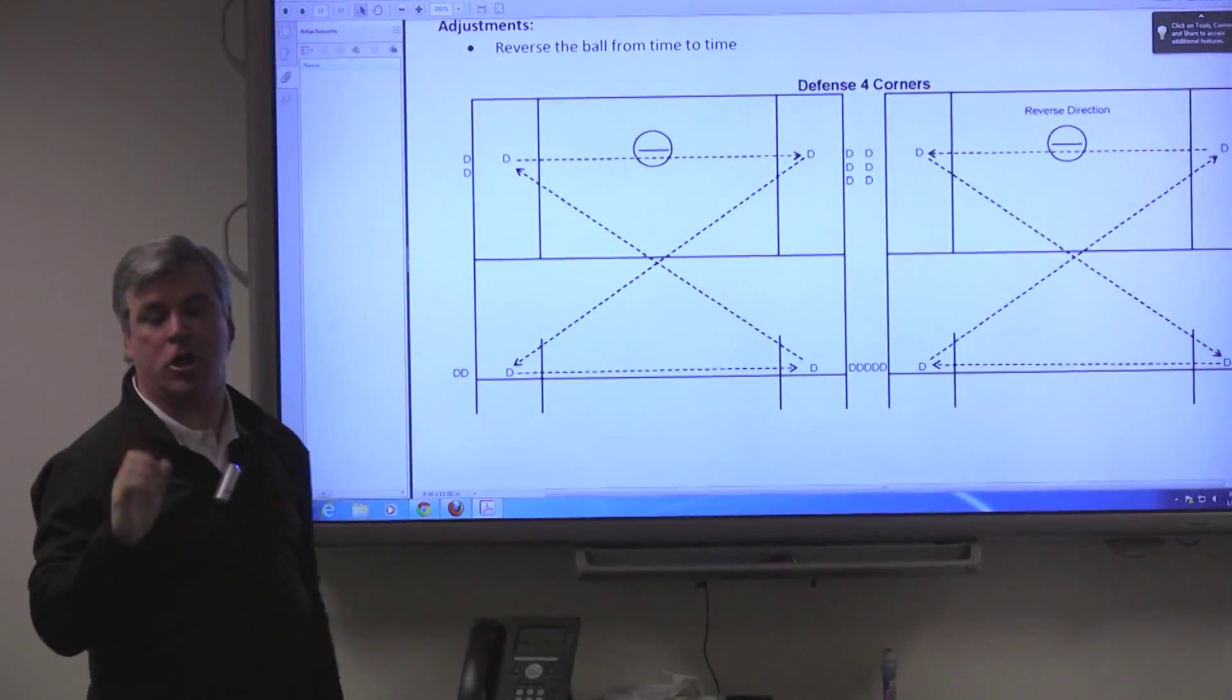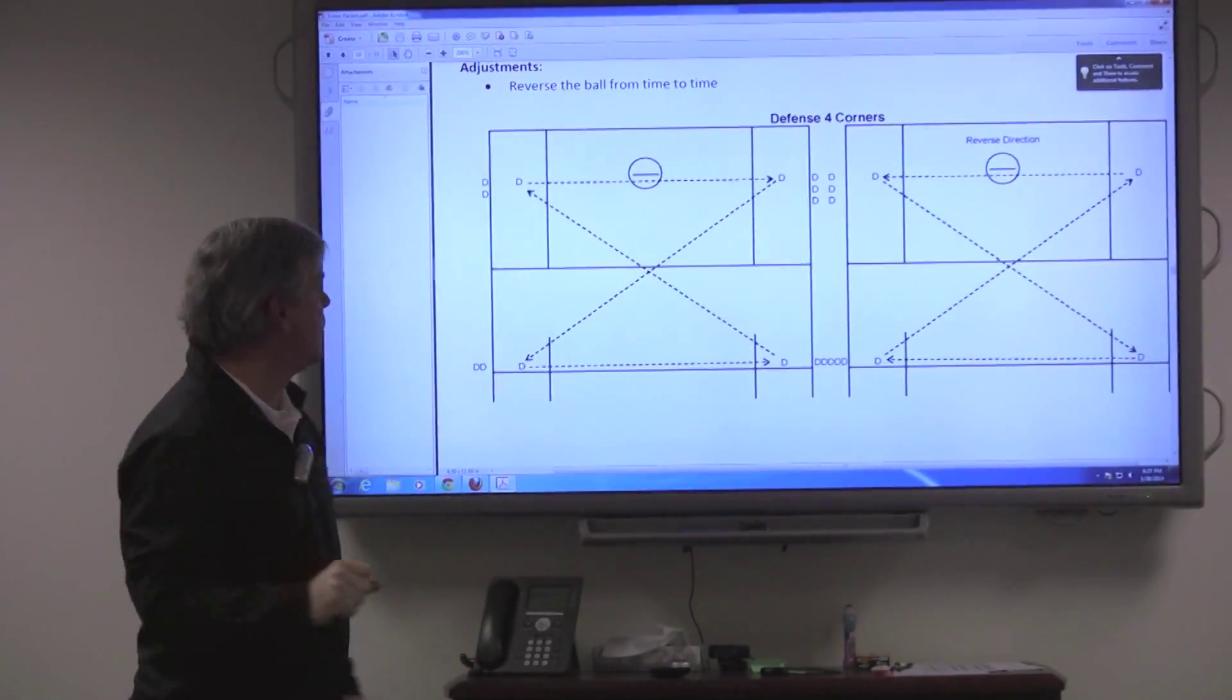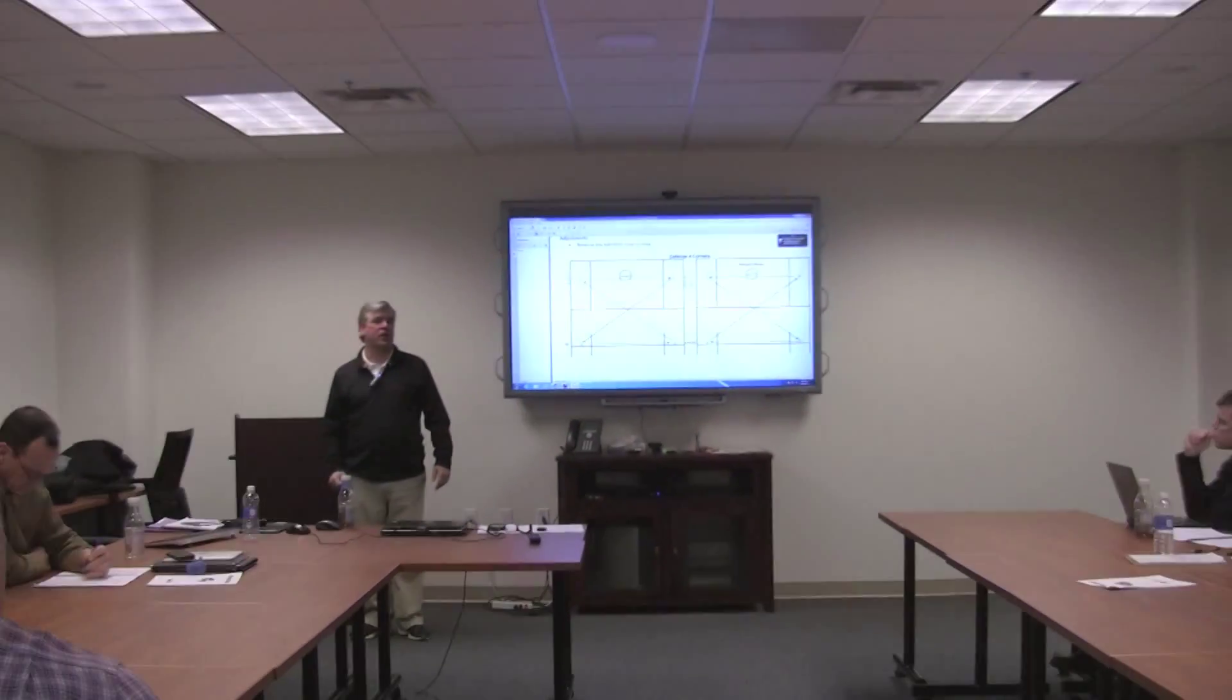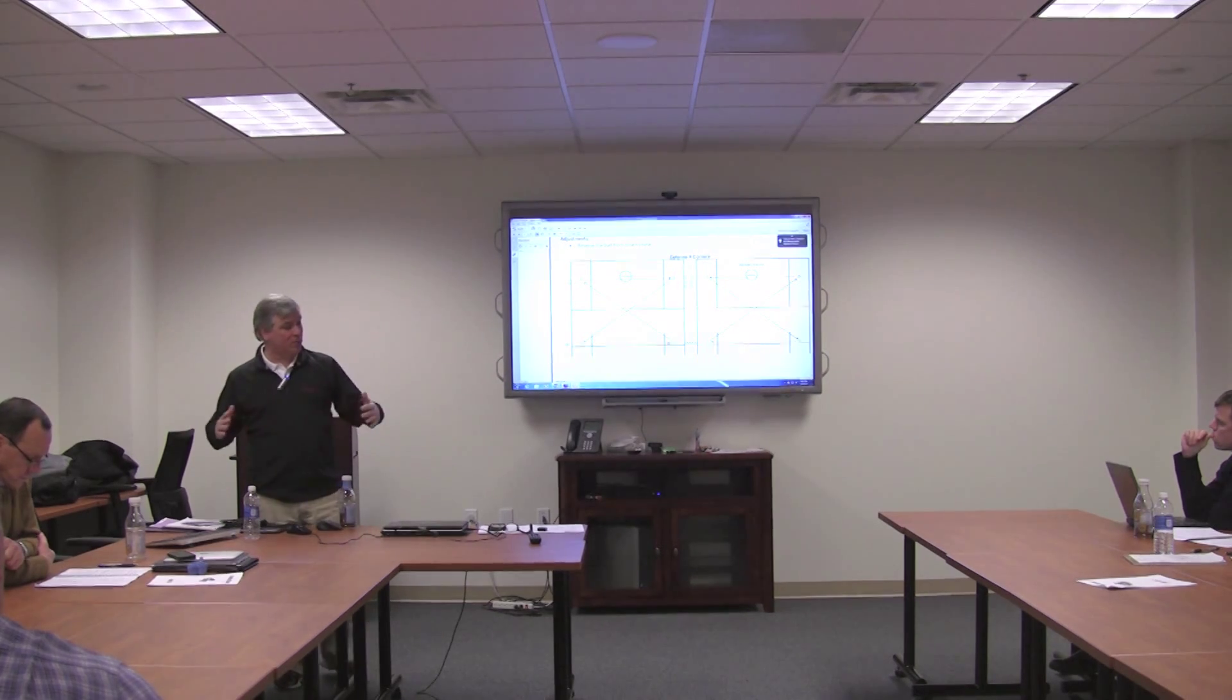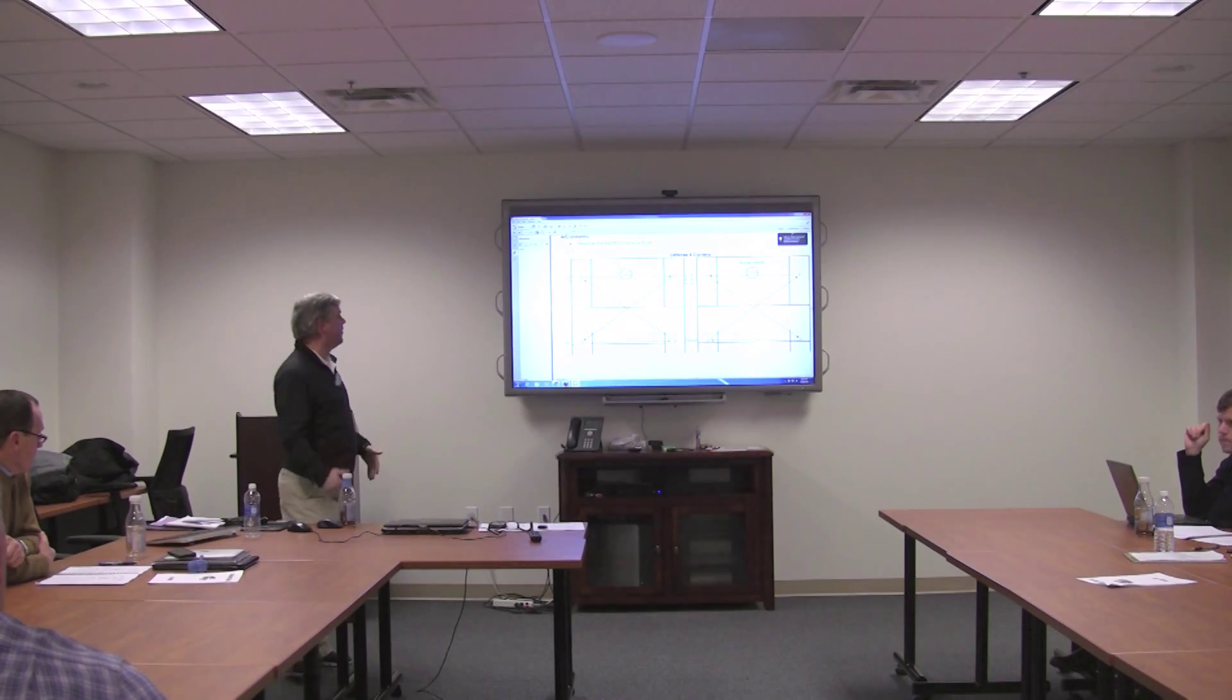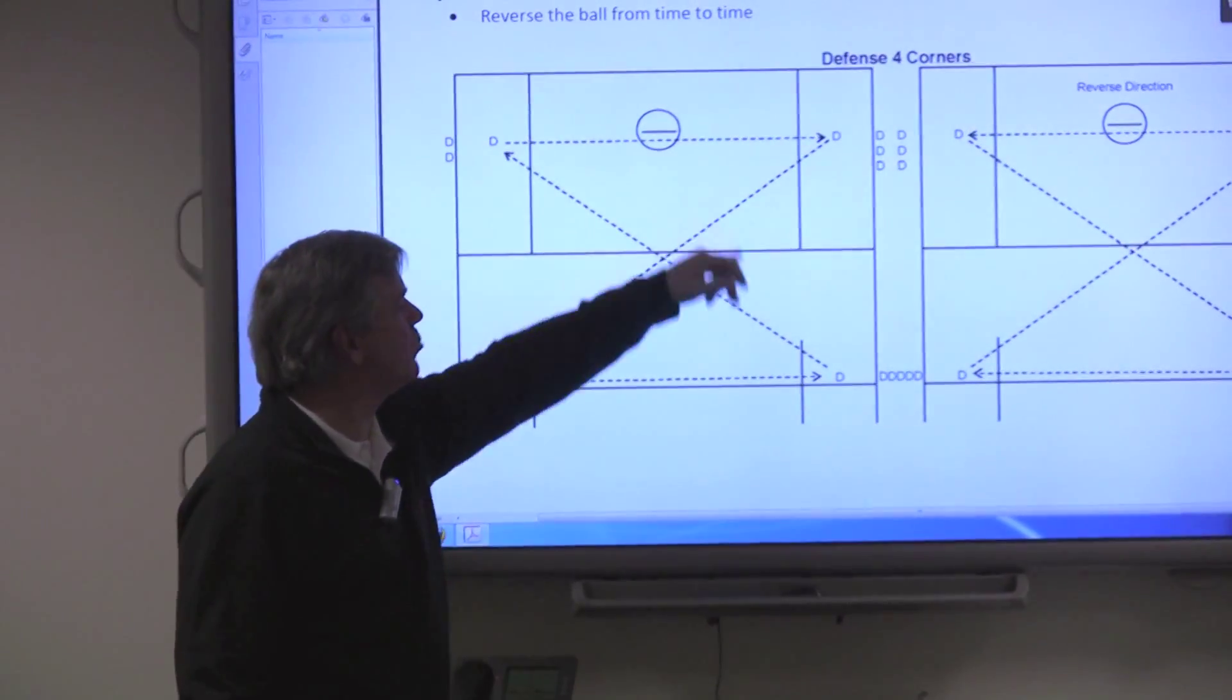One of the things I noticed in youth clearing is the defensemen break out about like this. They think that's a breakout. They've got to break out to the restraining line - looking back but running to the restraining line, make the attack defend a big field. They should be able to make a restraining line to restraining line pass.